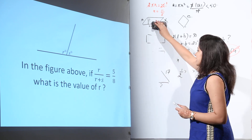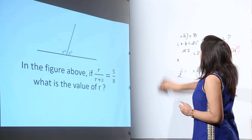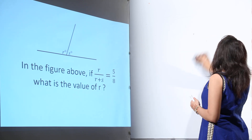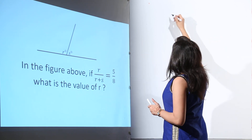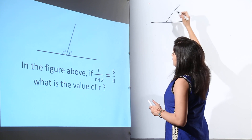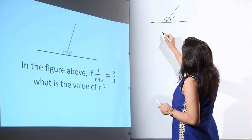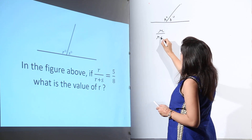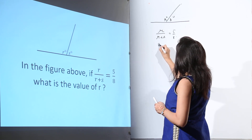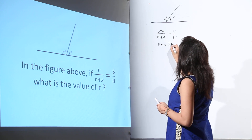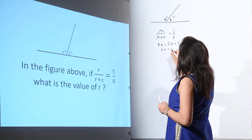This is a numeric entry question, meaning you have a question and a blank to fill in with the correct answer using your keyboard. Looking at the figure, we have r degrees and s degrees. We are given that r / (r + s) = 5/8. That means 8r = 5r + 5s, which gives us 3r = 5s.